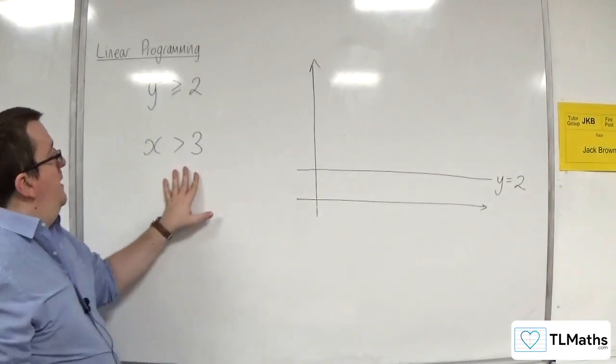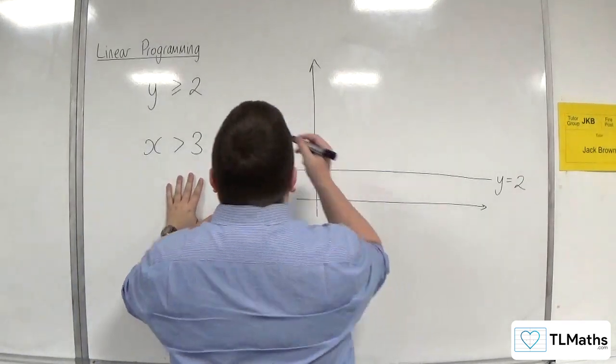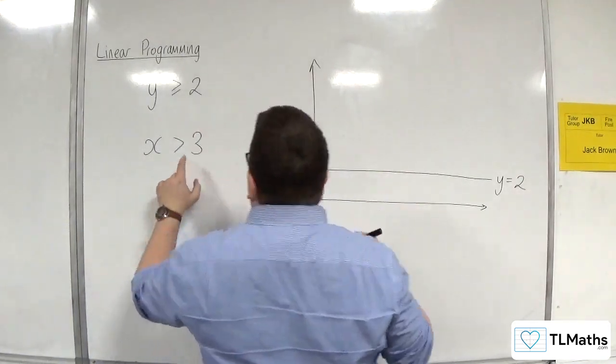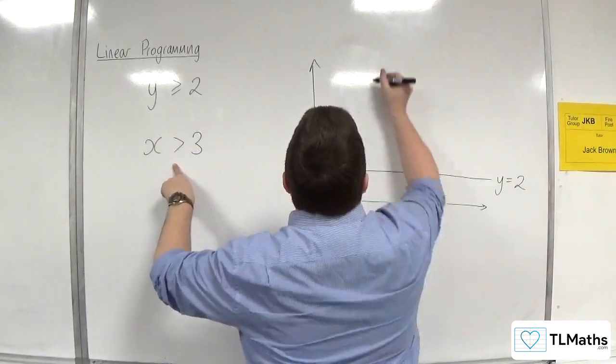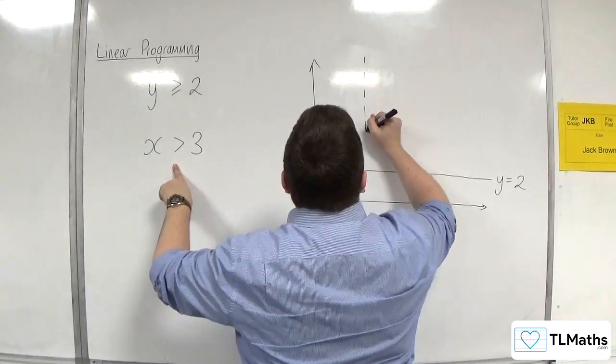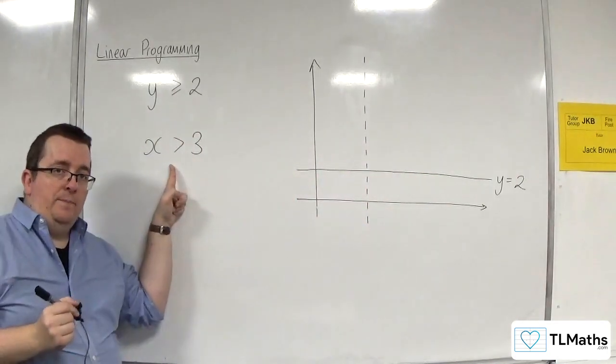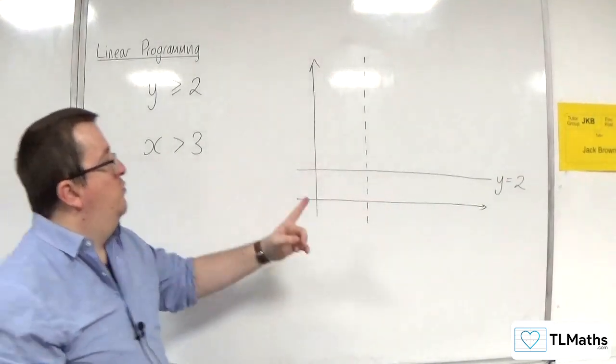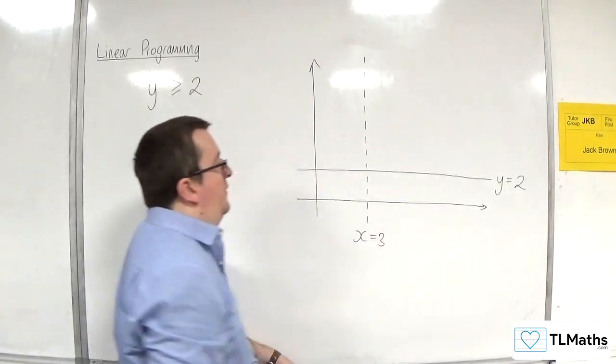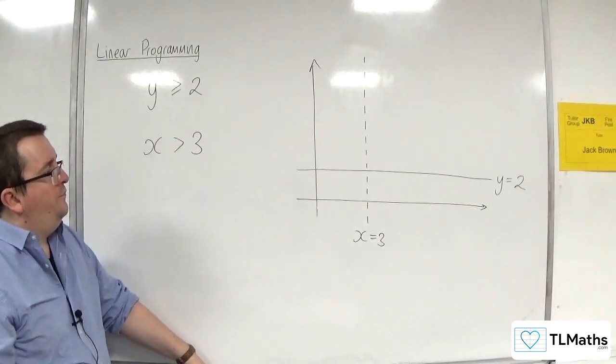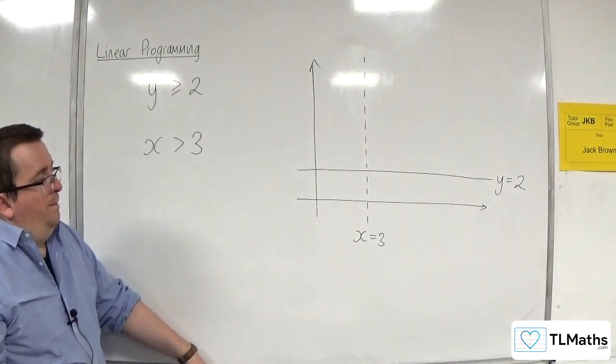Let's look at this one next. x is greater than 3. So x is greater than 3 would be a vertical line at 3. Now, because it's greater than, we're going to draw those with a dashed line. So if they're greater than or less than, so they're a strict inequality, you draw them with a dashed line. There's x is equal to 3.